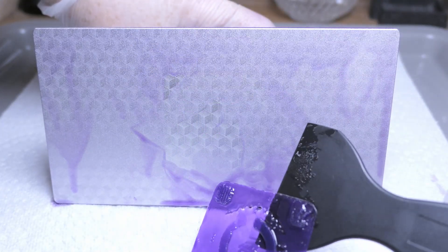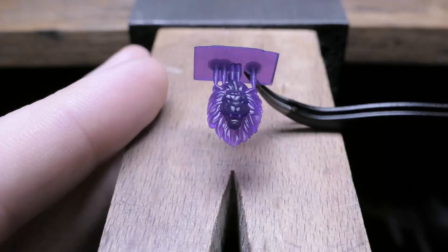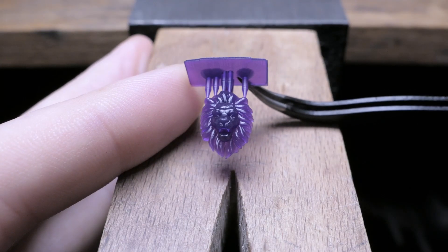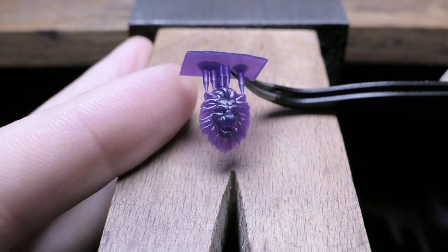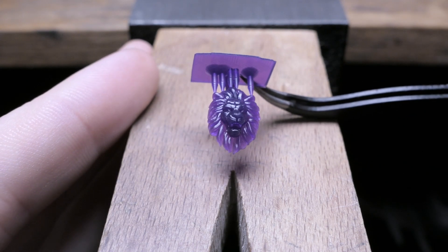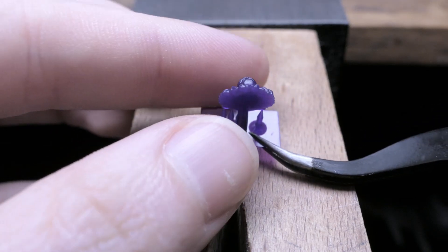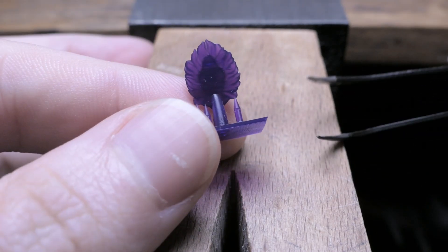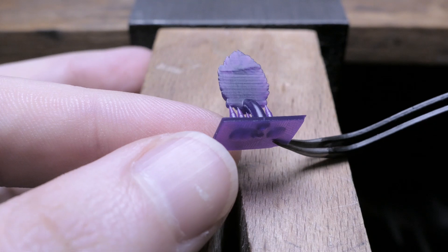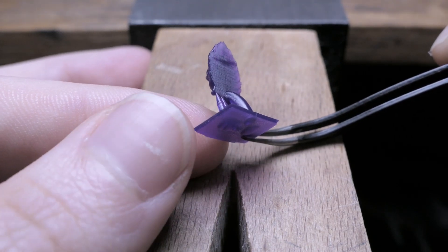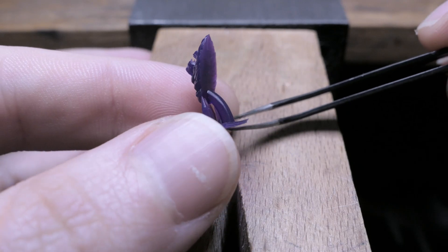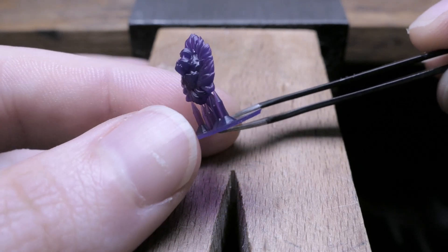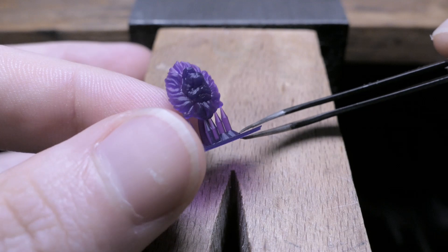So I did a few calibration prints beforehand just to make sure my settings were going to be good. And then I printed the Lionhead itself. And I gotta say, I'm really impressed with the results. I'm coming over from a 2K resolution 3D printer, which actually served me really well for what I was working on. But I'm going to be trying to get into more detailed castings, so this is definitely a step up.